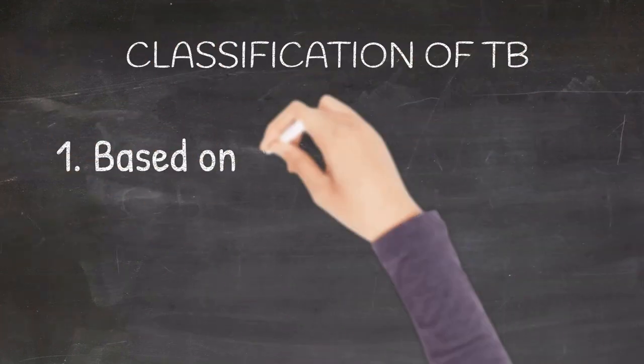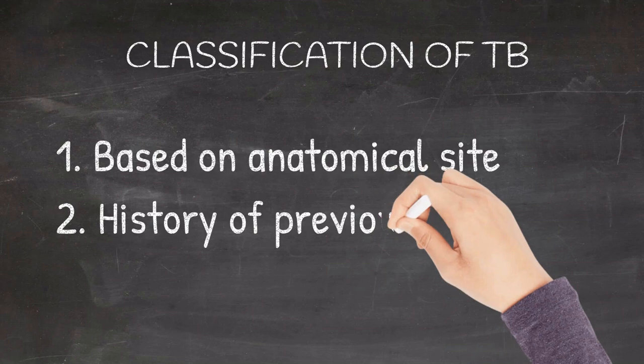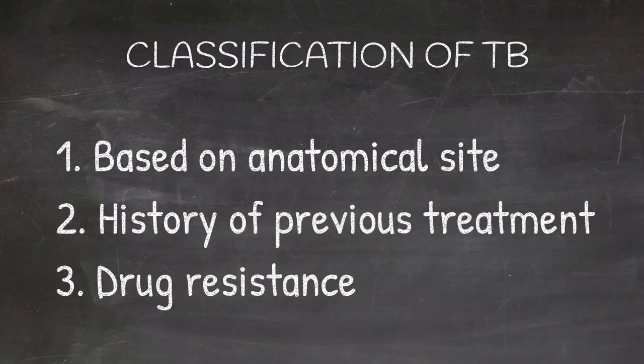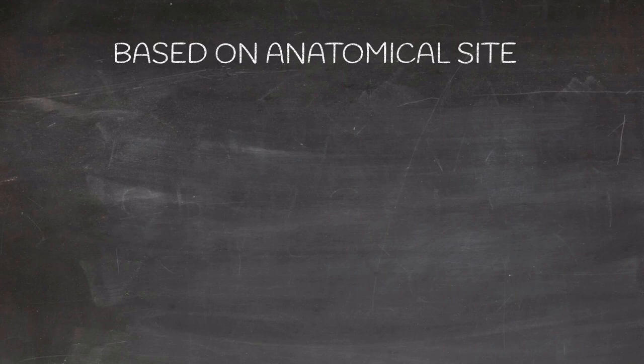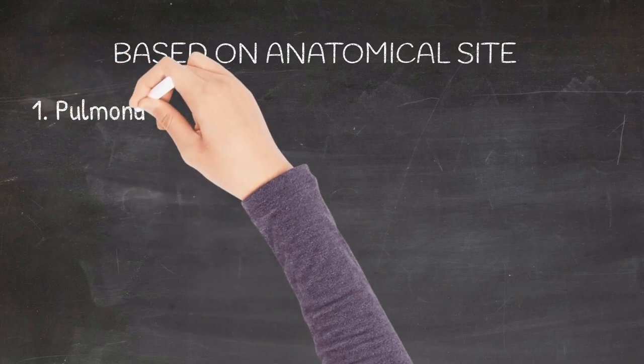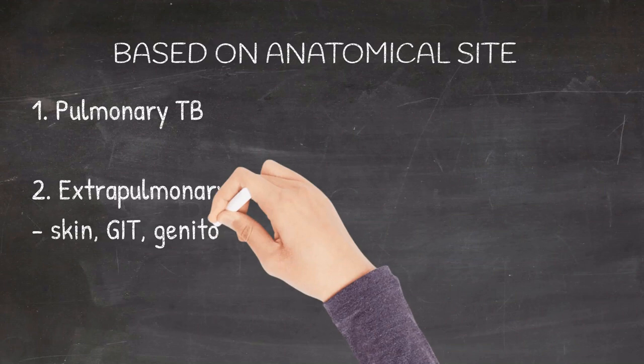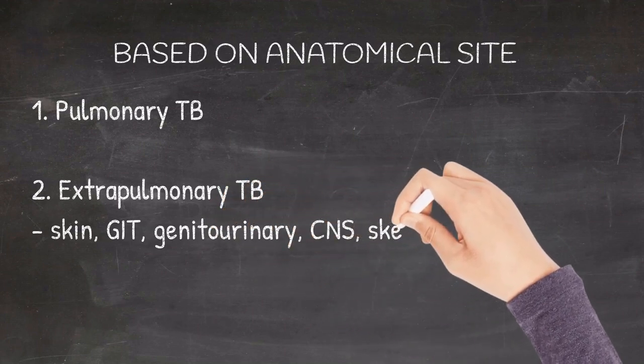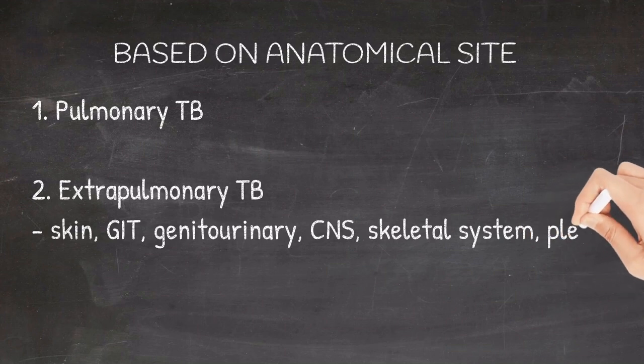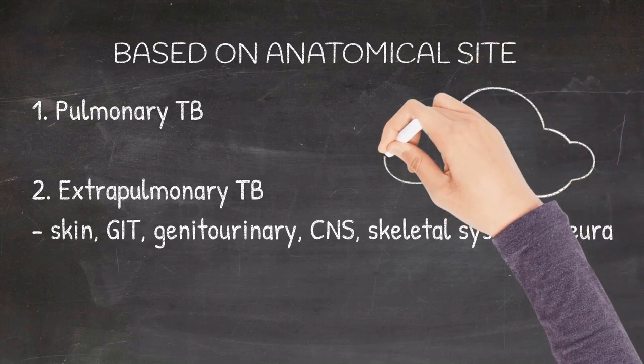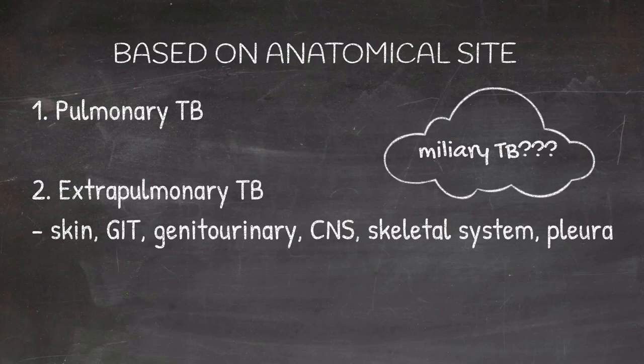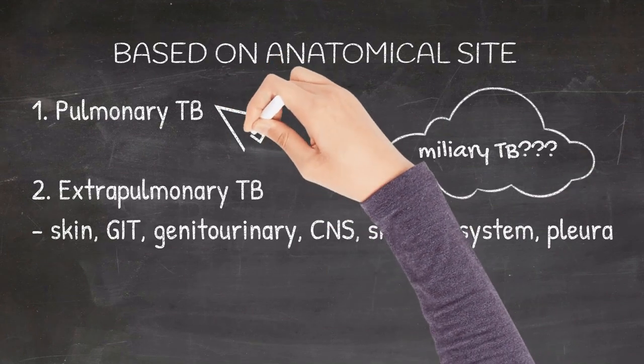Tuberculosis can be classified based on the anatomical site, the history of previous treatment or drug resistance. Classification based on anatomical site: It can be pulmonary or extrapulmonary. Extrapulmonary tuberculosis is the one which involves skin, GIT, the genitourinary system, central nervous system, skeletal system or pleura. So where would we classify miliary tuberculosis? Basically, miliary tuberculosis is classified under pulmonary tuberculosis because there is involvement of lung. So in any case of tuberculosis, when the lung is involved, it is classified under pulmonary tuberculosis.